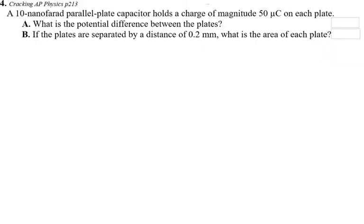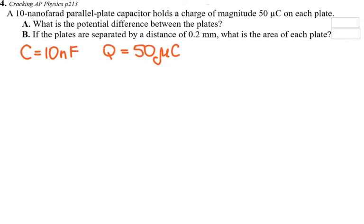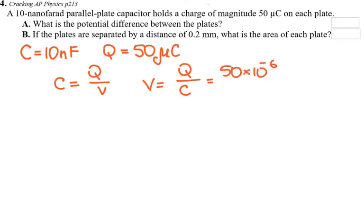Next question from an AP Physics study guide: a 10 nanofarad parallel plate capacitor (nano = 10⁻⁹) holds a charge of magnitude 50 microcoulombs (micro = 10⁻⁶) on each plate. What is the potential difference between the plates? Since C = Q/V, the potential difference equals charge divided by capacitance: 50 × 10⁻⁶ divided by 10 × 10⁻⁹ equals 5000 volts.